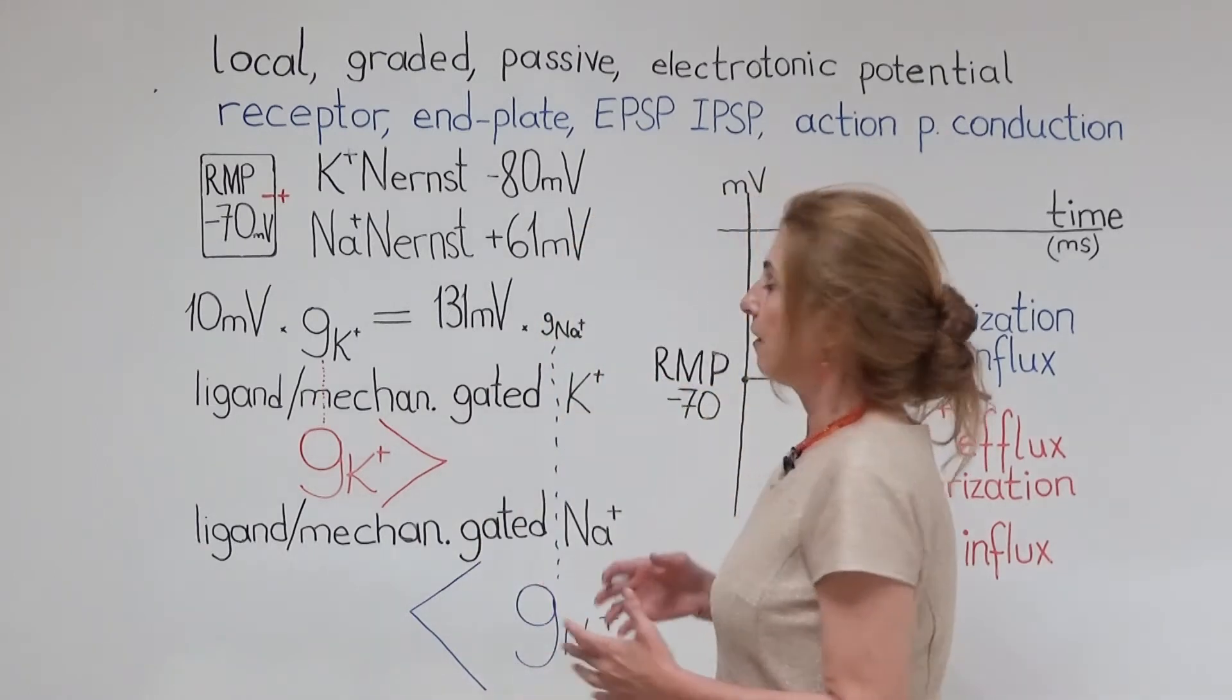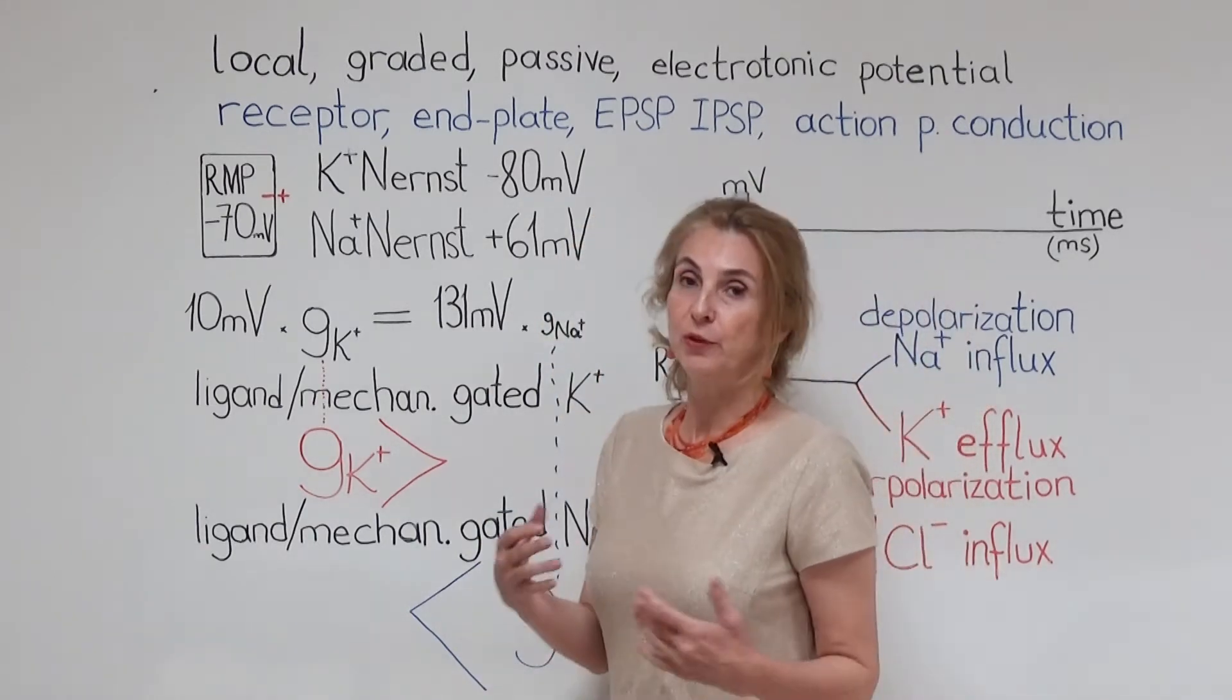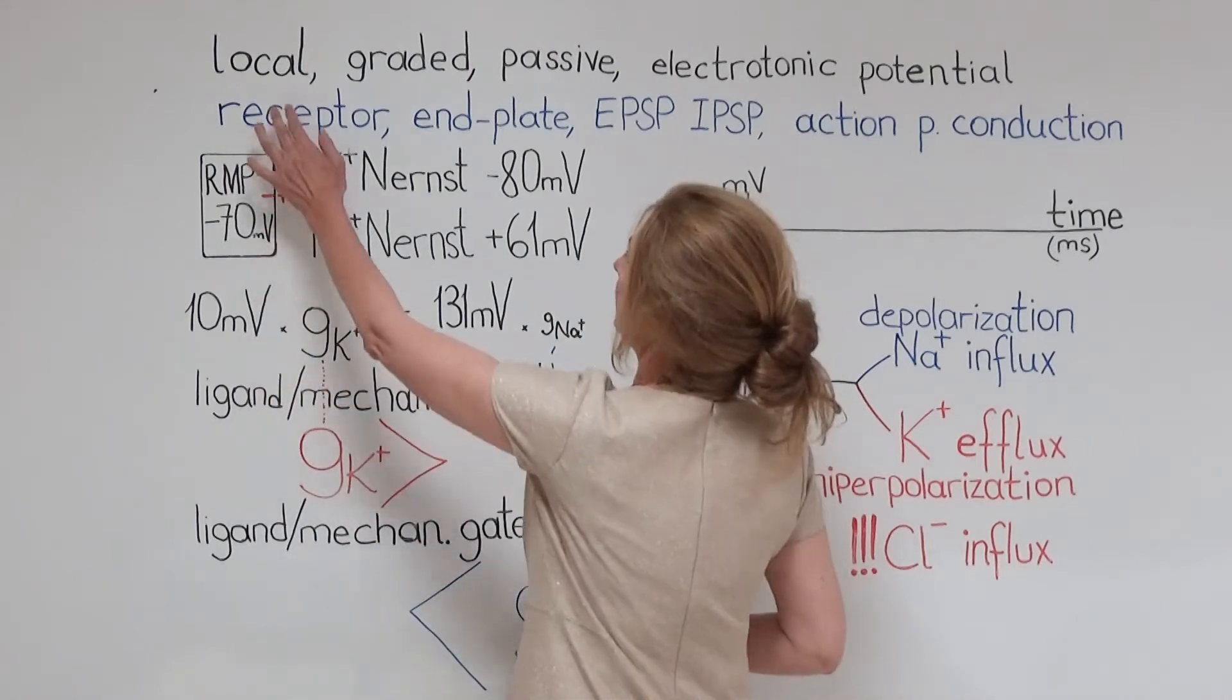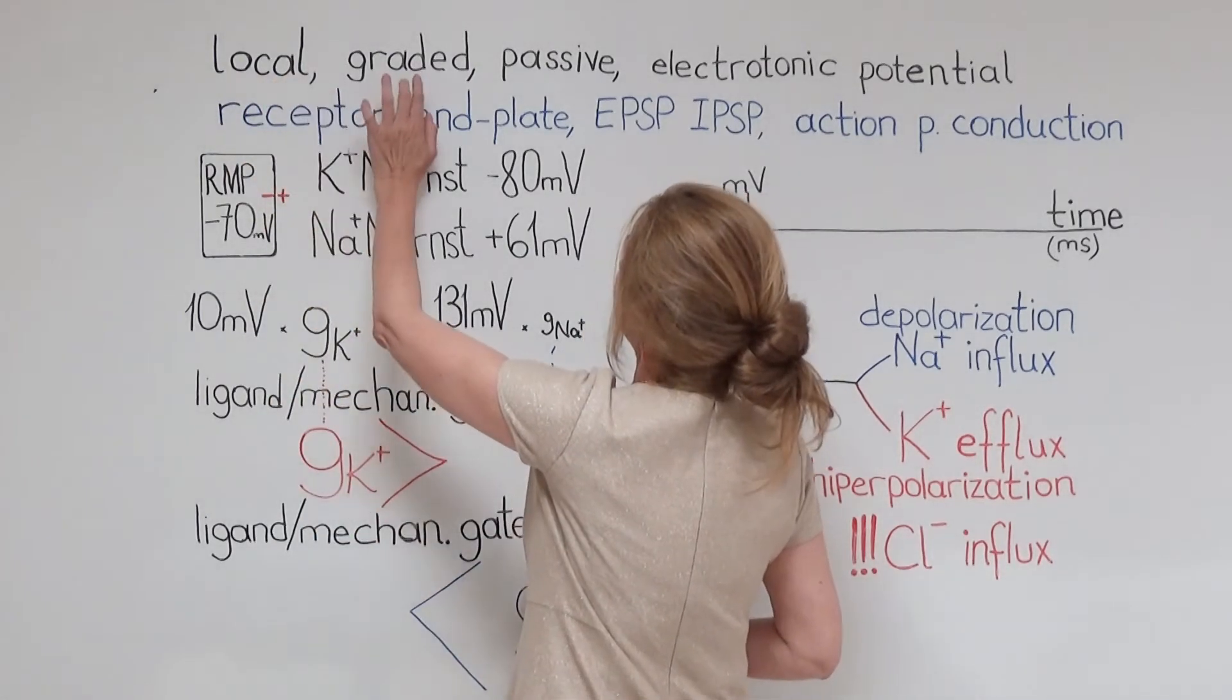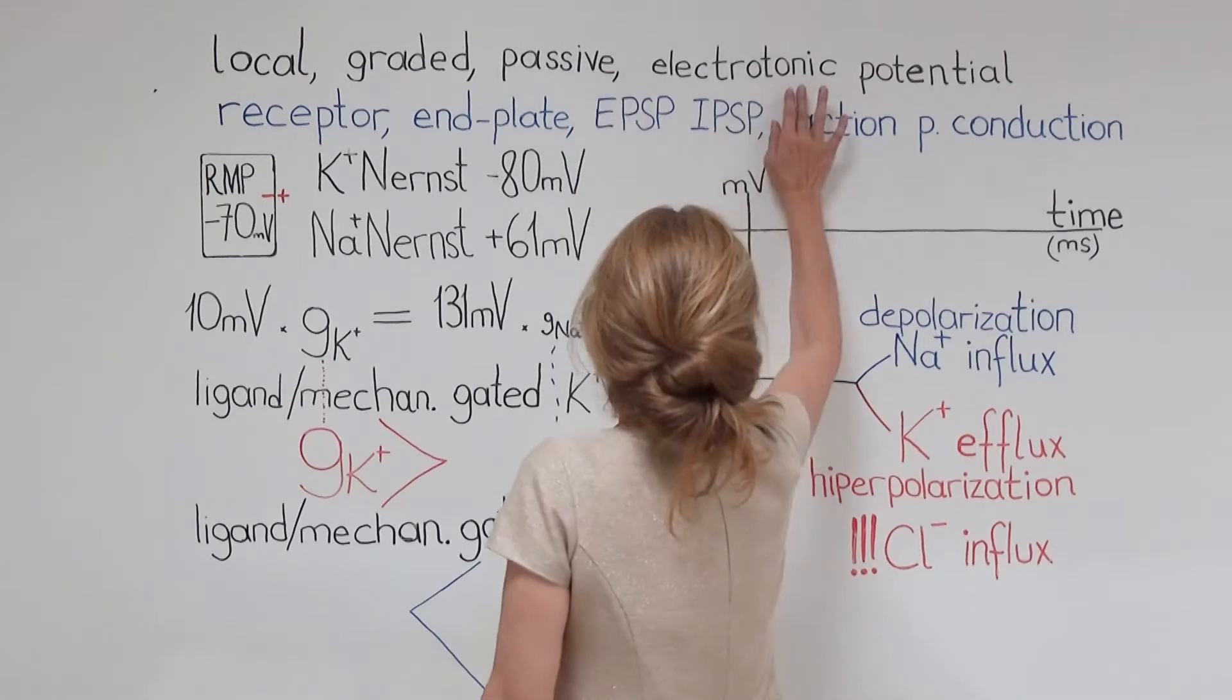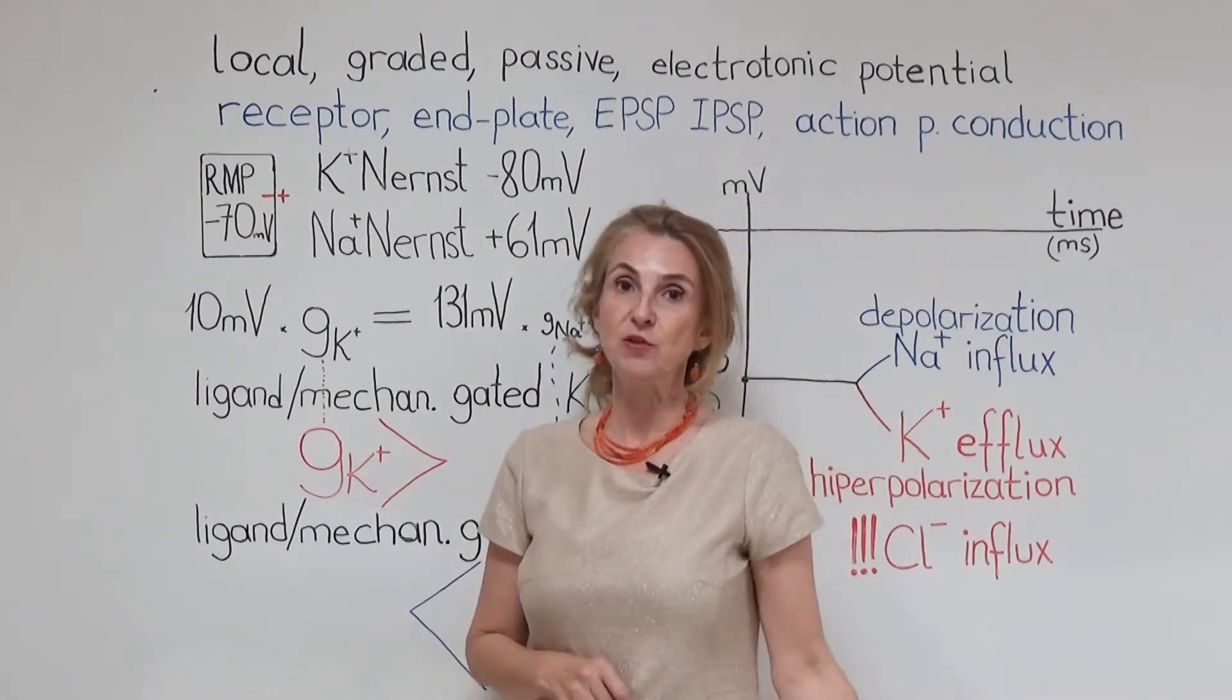Local potentials have many different names. You can come across all of these in the books. They can be called local potentials, graded potentials, passive potentials or electrotonic potentials.